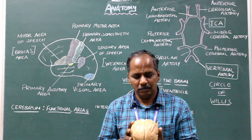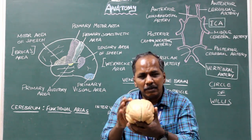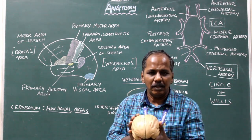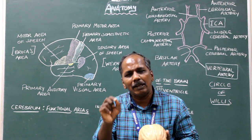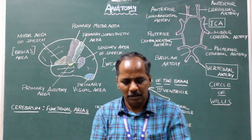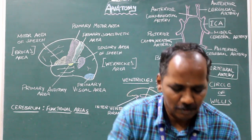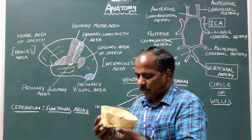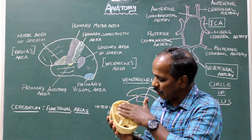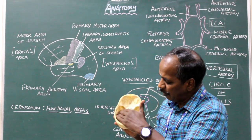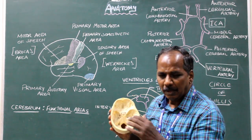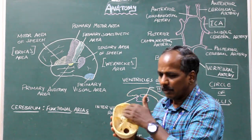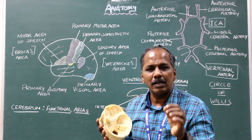Cerebrum. It is the largest part of the brain. It is situated in the cranium, in the anterior and middle cranial fossae. The cerebrum is situated in the anterior and middle cranial fossae. The posterior cranial fossa lodges the cerebellum.